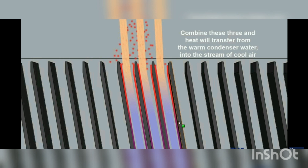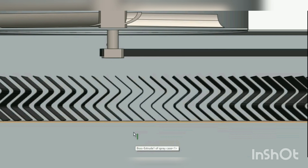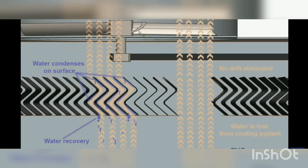Here is the drift eliminator discussed earlier. Due to its shape, as air containing water droplets strikes it, the moisture loses energy and condenses out. You can see small blue droplets representing the condensing water. On the right-hand side, you can see that without a drift eliminator there would be no recovery of that water. So the basic purpose of the drift eliminator is to recover water that would otherwise be lost.